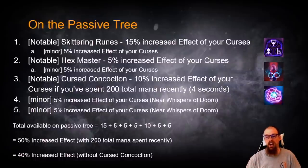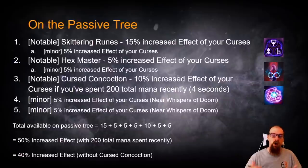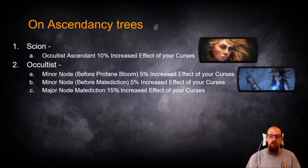So in other words, if you don't want to have to rely on spending 200 mana over the course of the last 4 seconds, you can get 40% reliably on the passive tree, or 50% if you're willing to devote enough mana over the course of recent 4 second usage. So on the base tree, you can get 40 conditional 50%, and then on your Ascendancy tree,